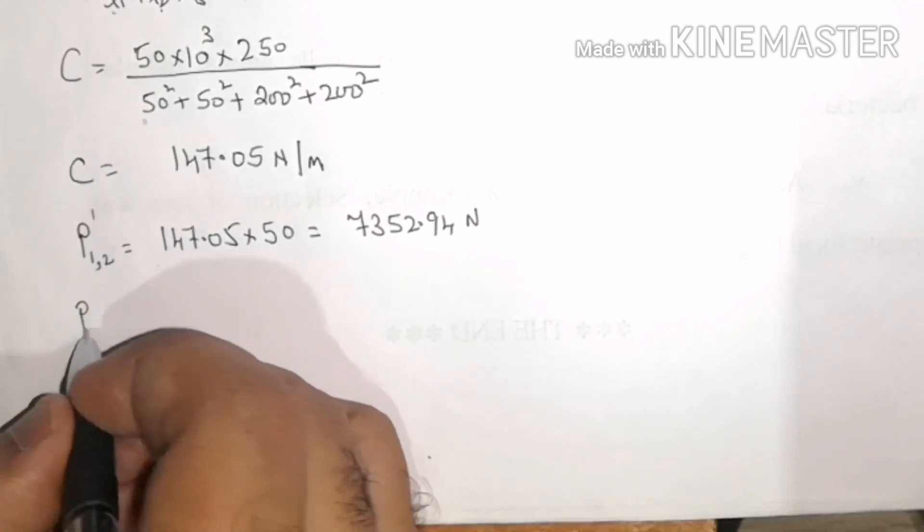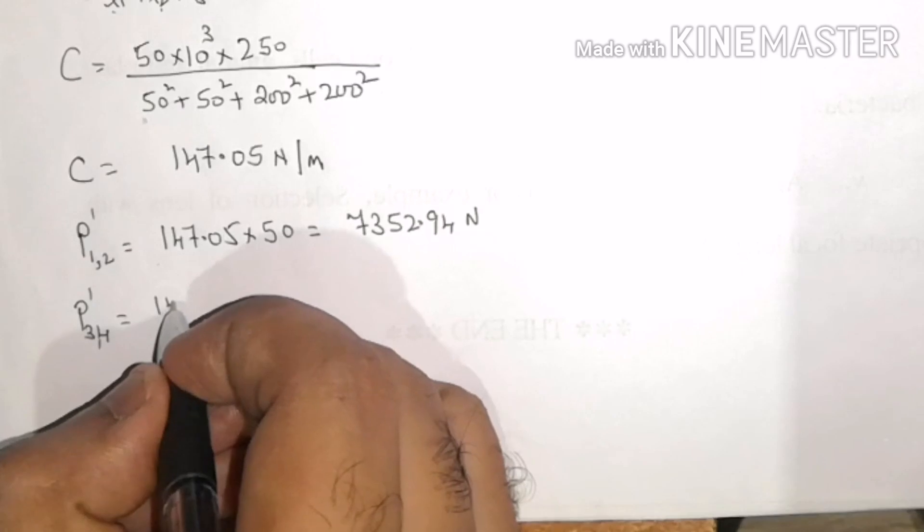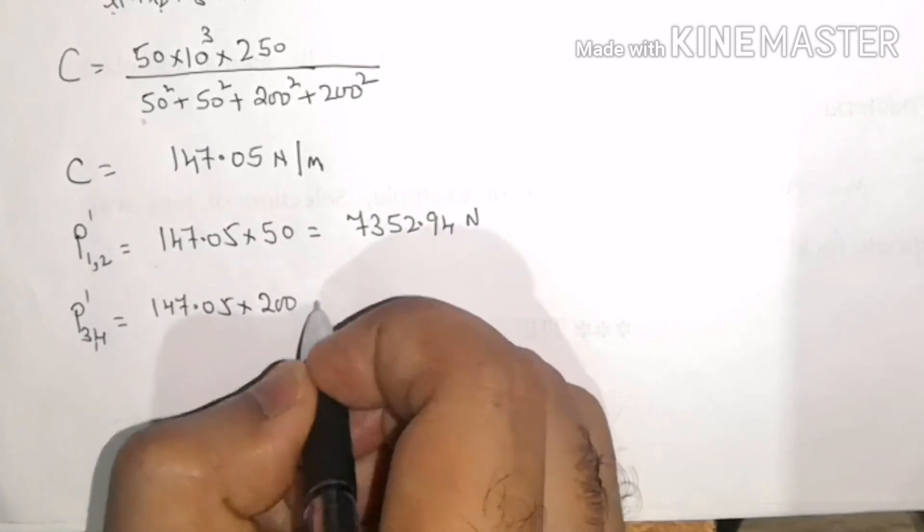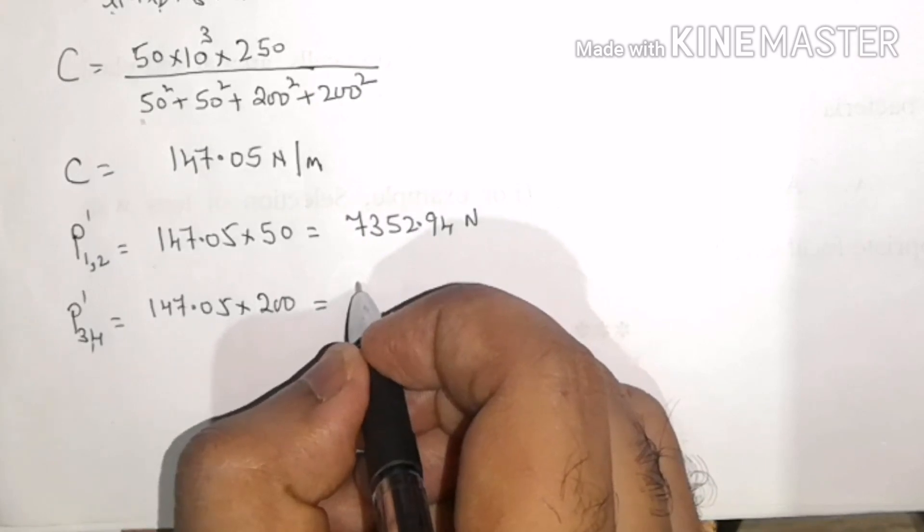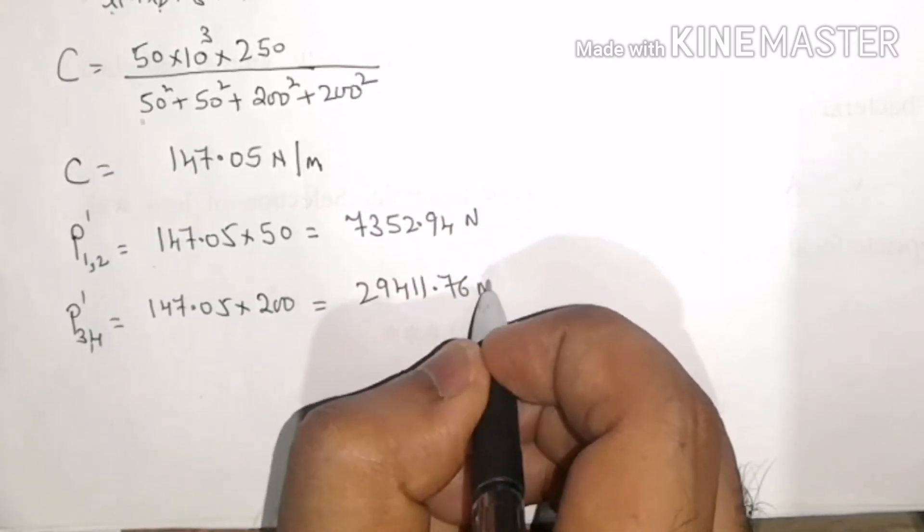Similarly, I can find P3 and P4 as 147.05 × 200 = 29411.76 N.